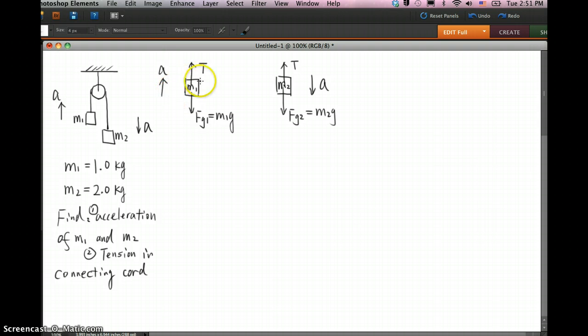So now we apply Newton's second law to each of the masses. For M1, obviously because acceleration is going up, the tension force T must be greater than Fg1. So we use tension T minus Fg1, that's the net force acting on M1, so it equals M1 times acceleration.